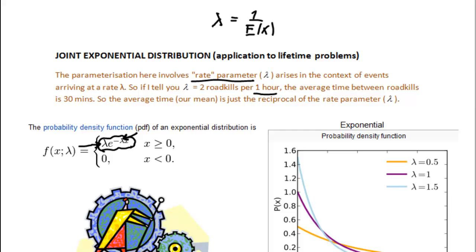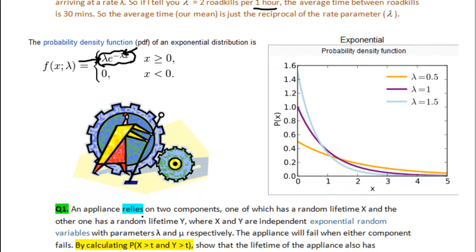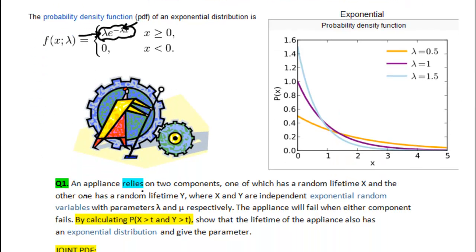Okay, so now we had a brief introduction to the exponential distribution. And we are told in our example that an appliance relies on two components, one of which has a random lifetime X and the other has a random lifetime Y.